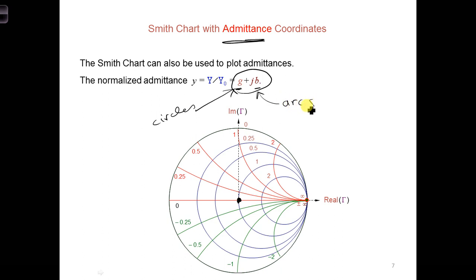And the lower half, the imaginary values on the lower half are still negative. You can see that here. And the top half are positive values.